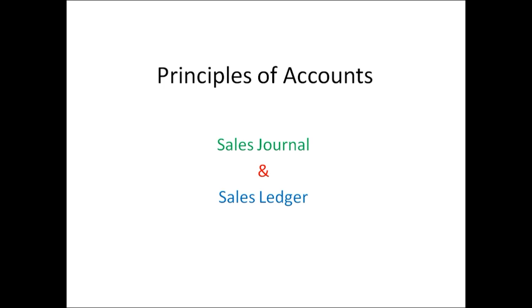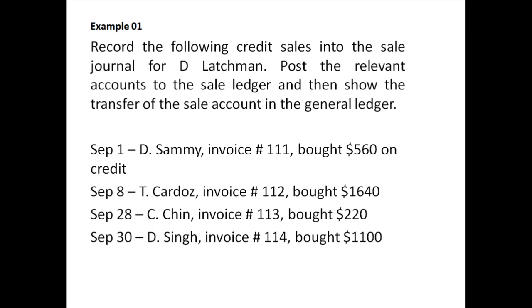Let us go into the example. Example one: record the following credit sales into the sales journal for D. Latchman, post the relevant accounts to the sales ledger, and show the transfer of the sales accounts in the general ledger. 1st September, Sami, invoice number 111, bought $560 on credit. 8th September, T. Cardos, invoice number 112, bought $1,640 on credit. 28th September, C. Chin, invoice number 113, bought $220 on credit. 30th September, D. Thing, invoice number 114, bought $1,100 on credit.